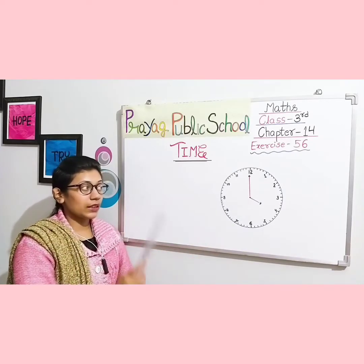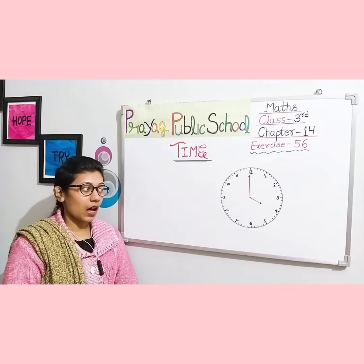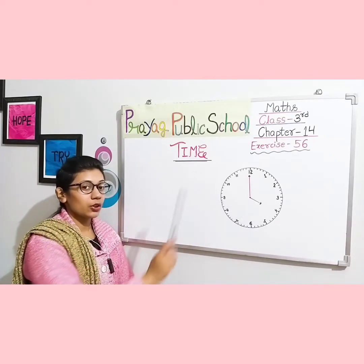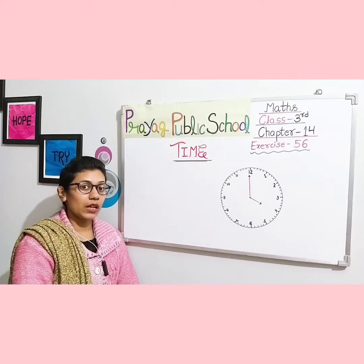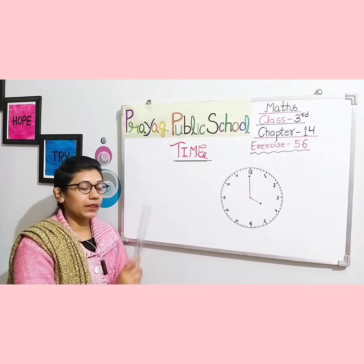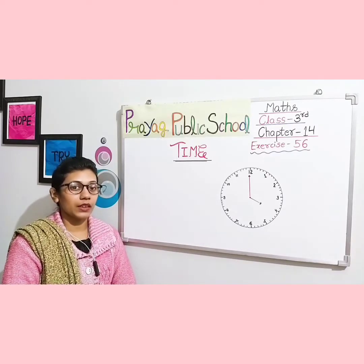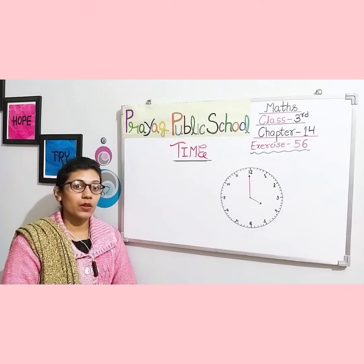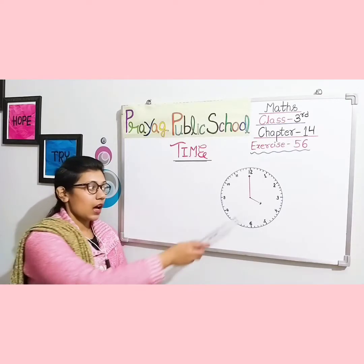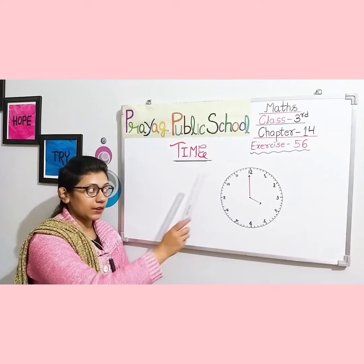How many rounds do our hands complete? When one round is complete, it is 12 hours complete. When two rounds are complete, one day equals 24 hours — our hand completes two full rounds in a day.